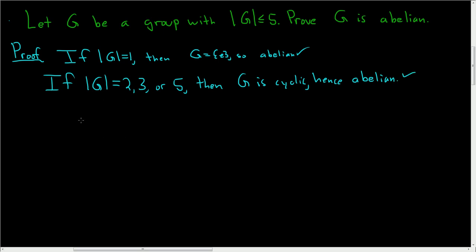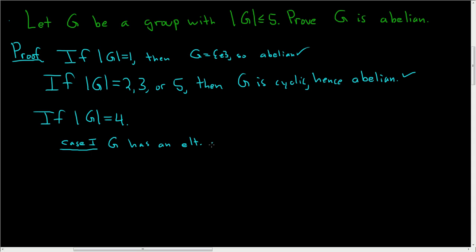The only remaining case is when G has order 4. Case 1: G has an element of order 4. Then G looks like the set {E, X, X², X³}, which is cyclic, and therefore abelian.